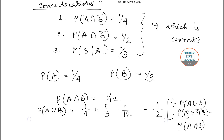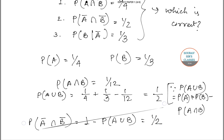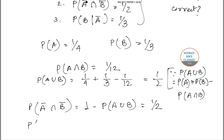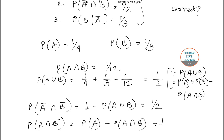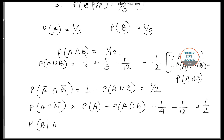Now we calculate probability of A bar intersection B bar. This equals one minus probability of A union B, which gives us one half. Next, probability of A intersection B bar equals probability of A minus probability of A intersection B, which gives us one by four minus one by twelve, equals one by six — sorry, that is one by six.